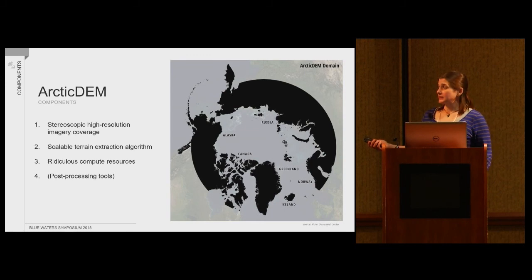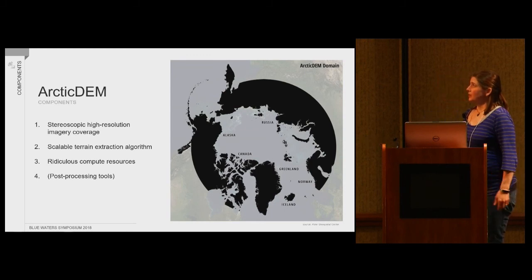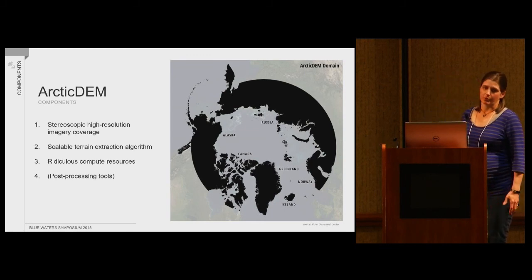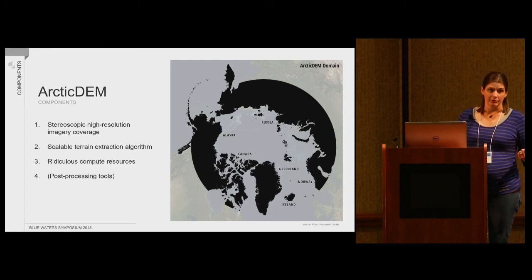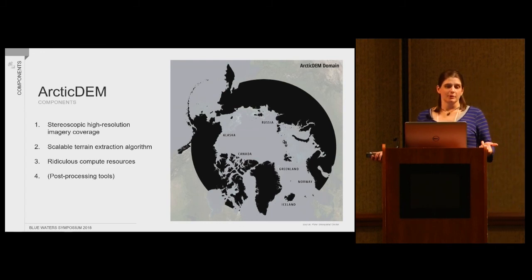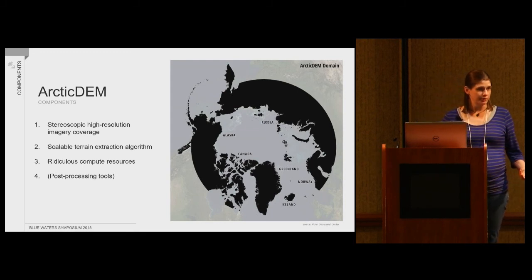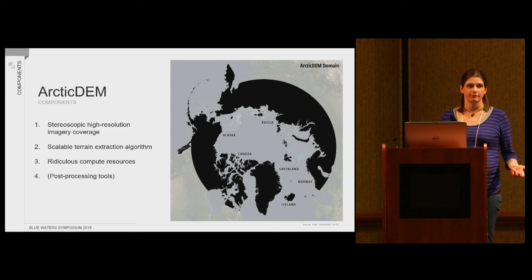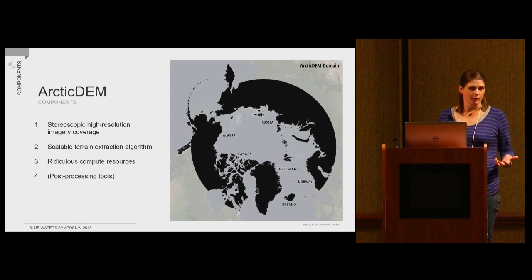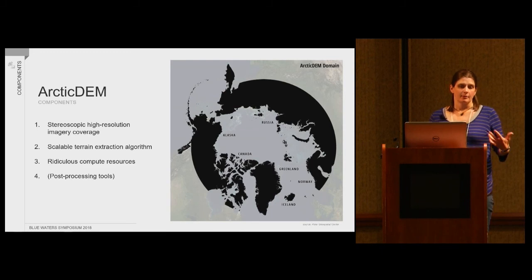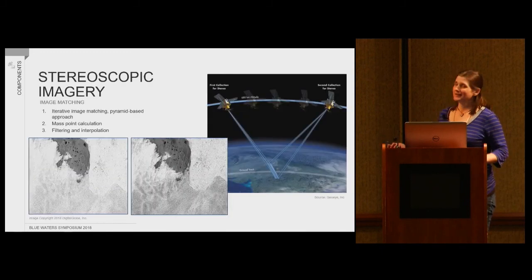In order to get this done we needed essentially three major components: stereoscopic imagery of the entire Arctic — no small feat; a scalable terrain extraction algorithm that had to be open source, since the off-the-shelf stuff from a commercial provider is not going to work at this scale; and then approximately a ridiculous amount of compute. Some post-processing tools as well, but we won't get into that now.